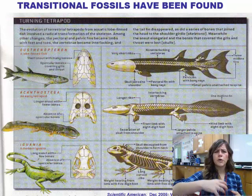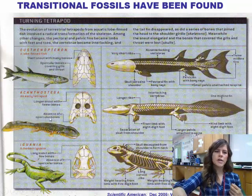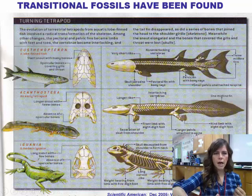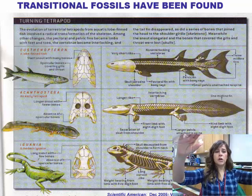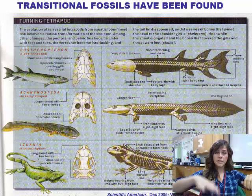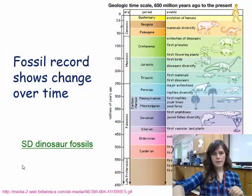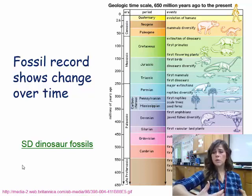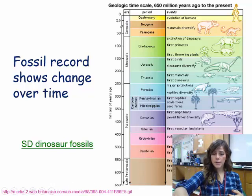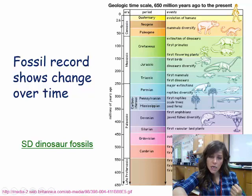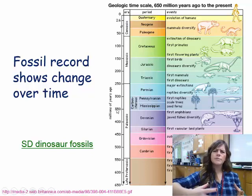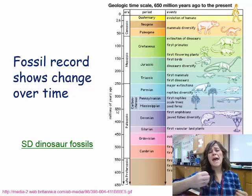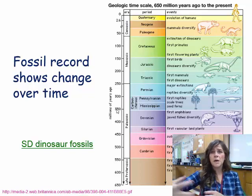We also see transitional fossils in the fossil record. You wouldn't directly connect a logfin fish with an iguana, but there's an in-between fossil that shows how it went from the logfin fish to the early tetrapod to the modern iguana. Basically, it shows us change over time. Less complex things become more complex over time, and it supports our idea of evolution because traits become adaptations, and those adaptations allow an organism to become more fit.